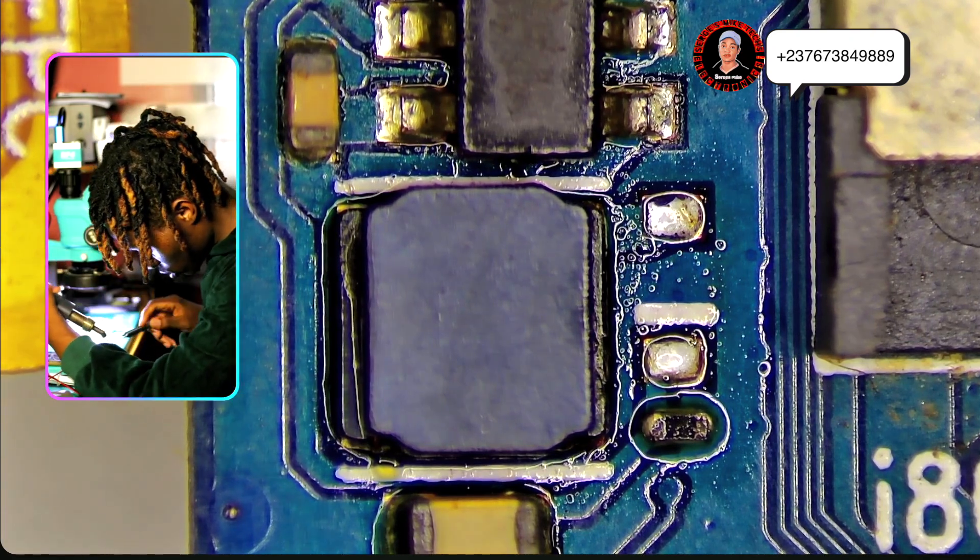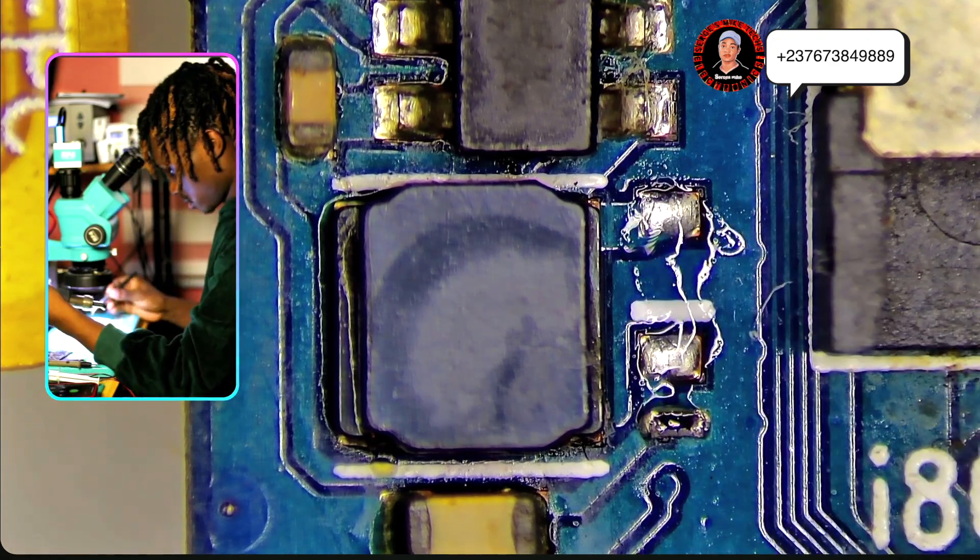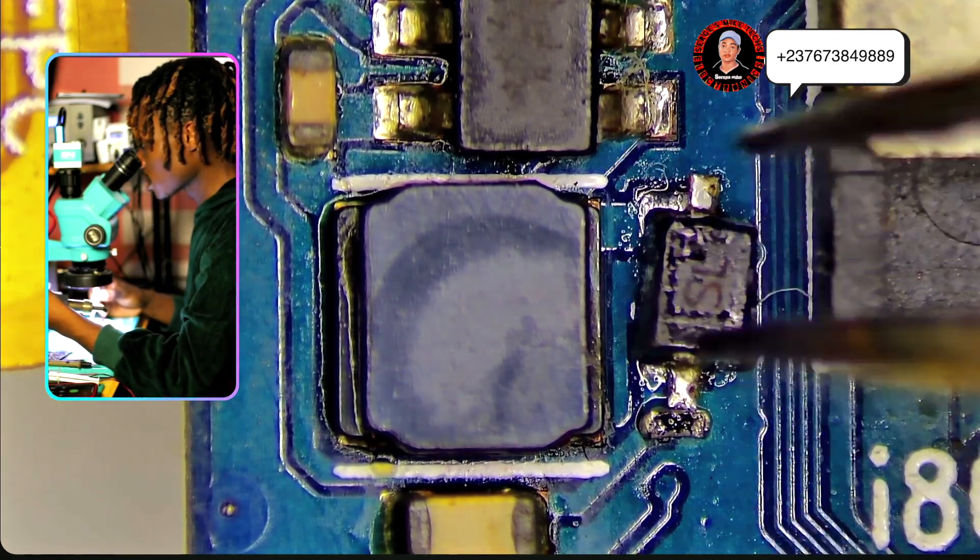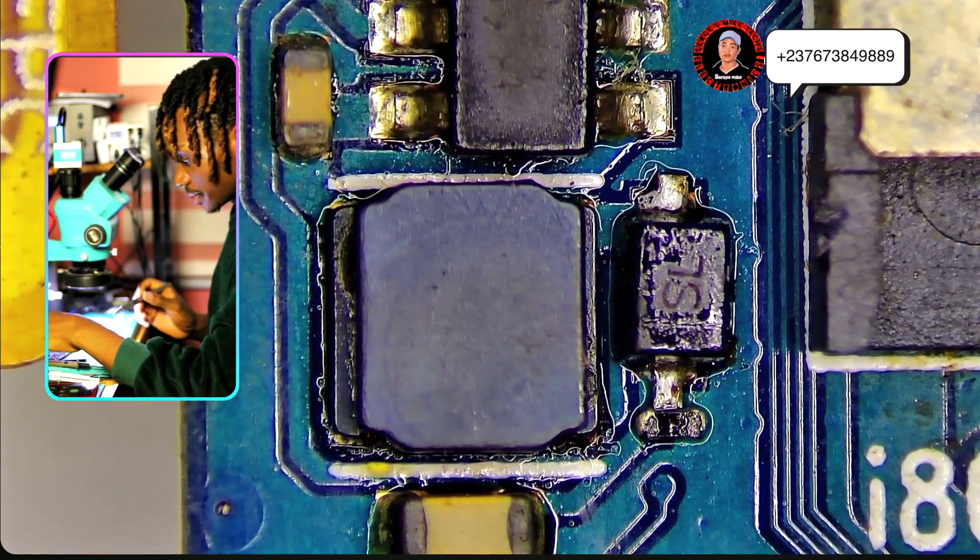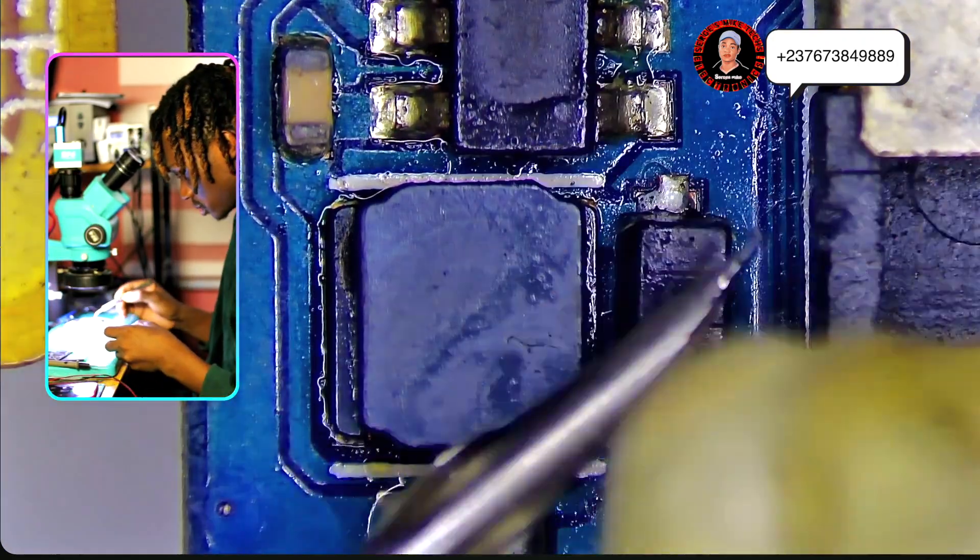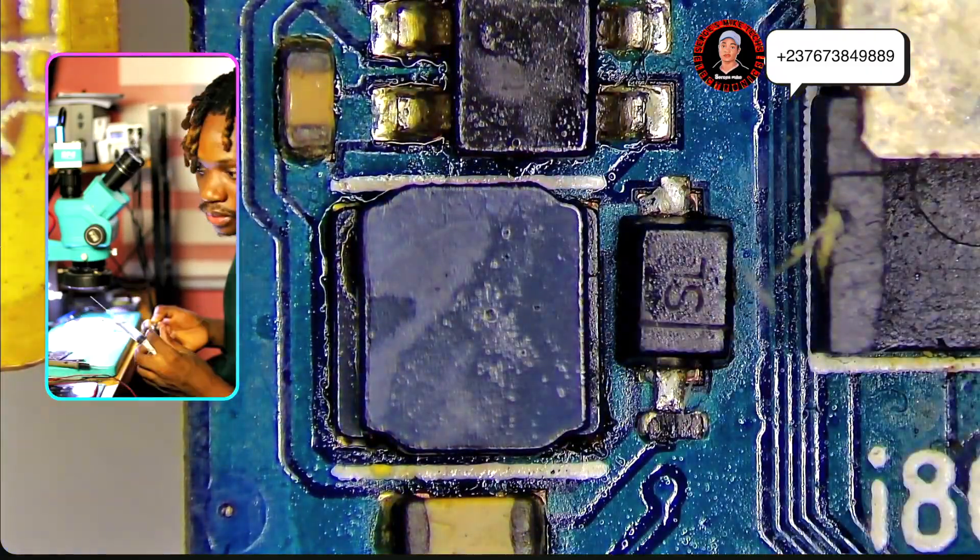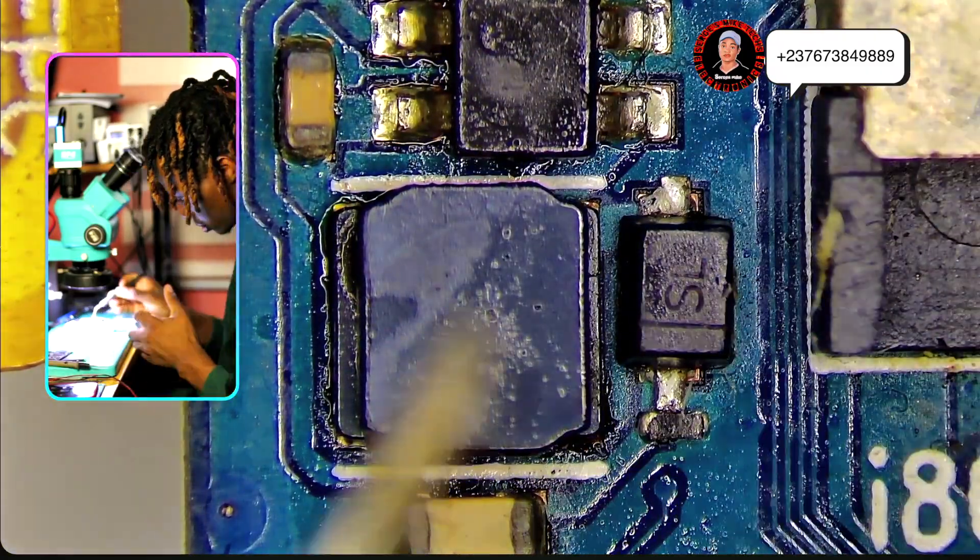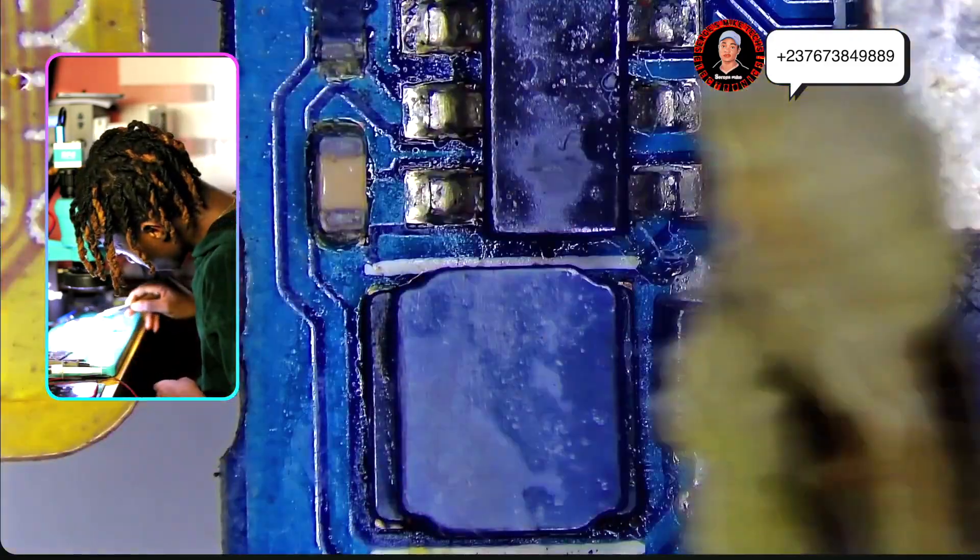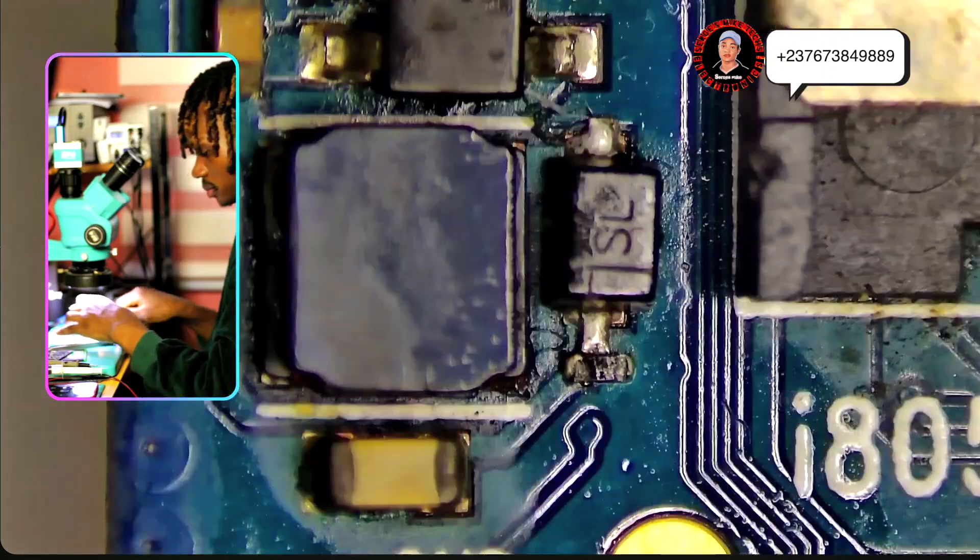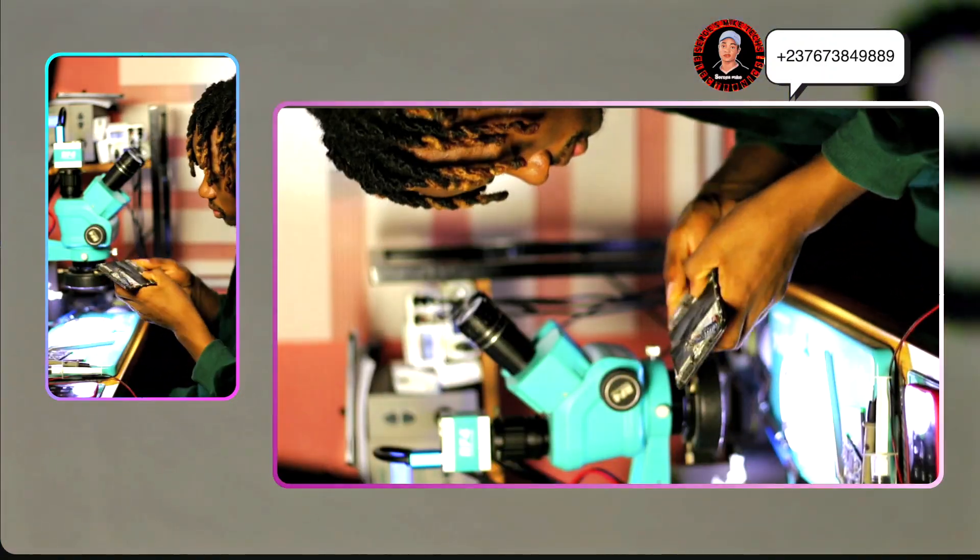I removed a diode from another PCB. If you are watching my courses, you can get them right now with a 50% discount. Make sure to send me a message using the number on the screen, the discount period is going to expire next month. So we replace that diode and clean the PCB. I like making everything clean. We test to see if replacing the diode solved the problem.